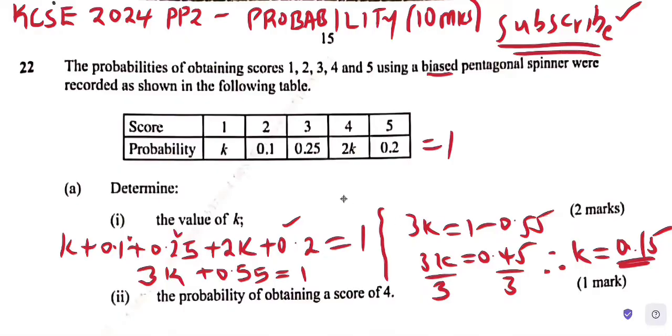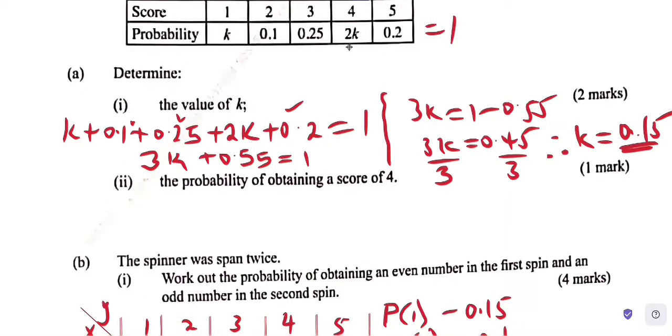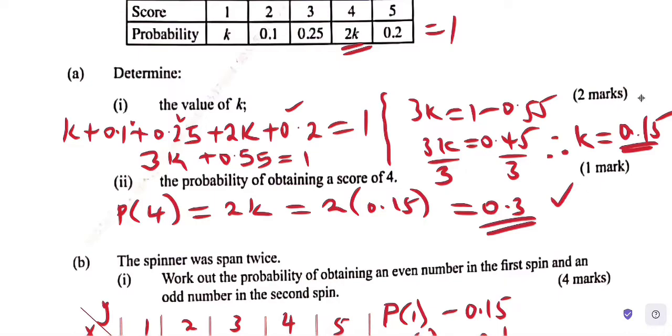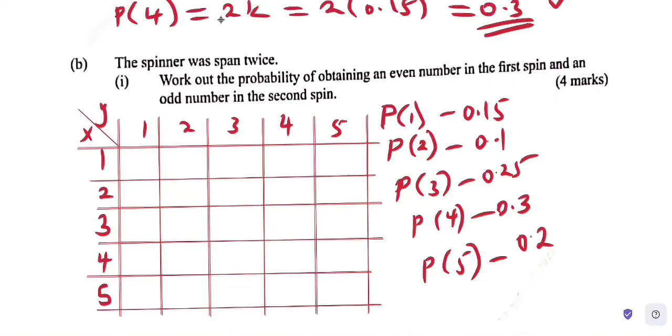Part (ii): the probability of obtaining a score of 4, which is equal to 2k. So that equals 2 times 0.15, which equals 0.3.